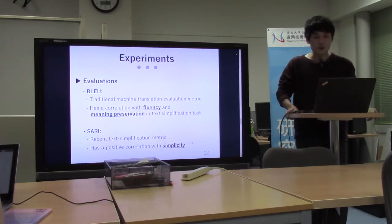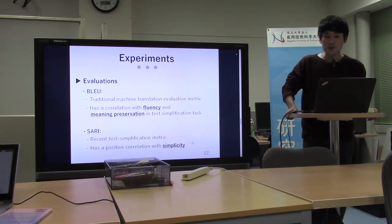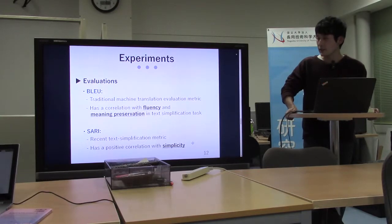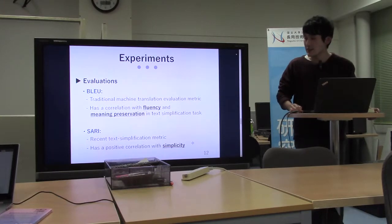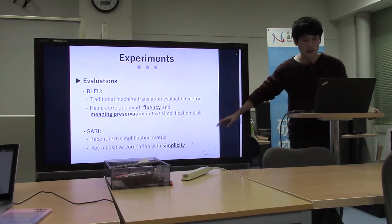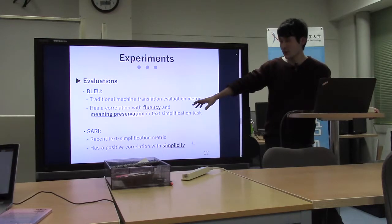We evaluate each system output on two metrics: BLEU and SARI. BLEU is a traditional machine translation evaluation metric. It has a correlation with fluency and meaning preservation in text simplification tasks. SARI is a recent text simplification metric. It is an automatic average of n-gram precision and recall of three rewriting operations: addition, keeping, and deletion. It has a positive correlation with simplicity. Generally, there is a trade-off between BLEU and SARI: fluency and meaning preservation versus simplicity.